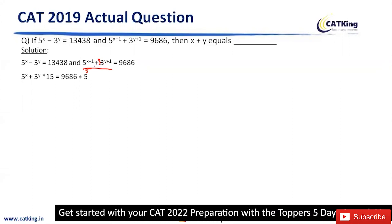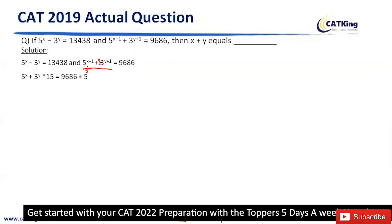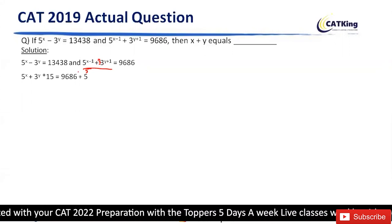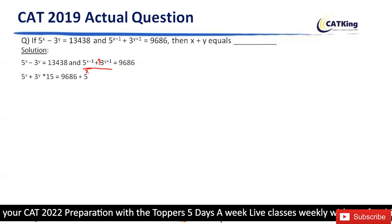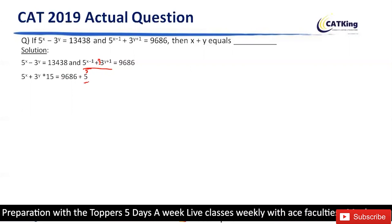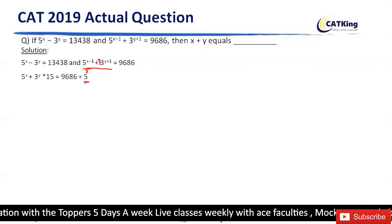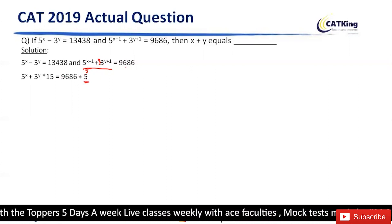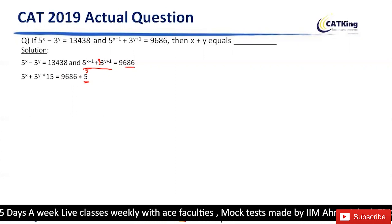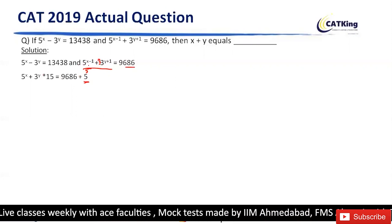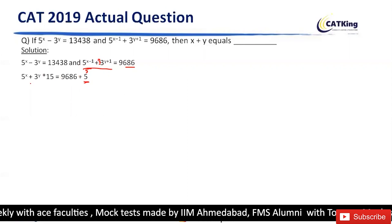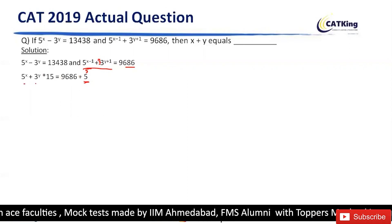So over here, if we take LCM, which is 5, this will come in RHS into 5. So this will become 5 raised to power x plus 5 into 3, that is 15. Clear?